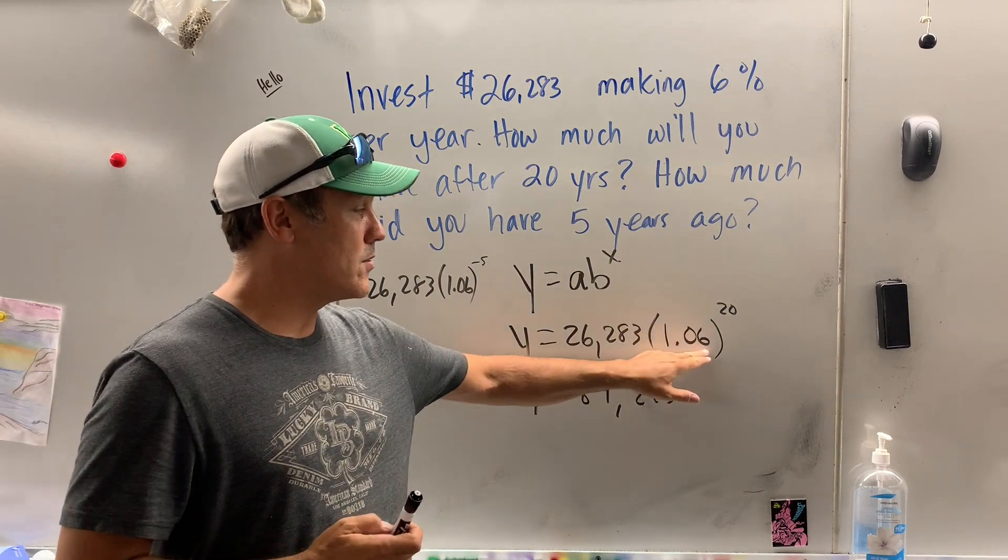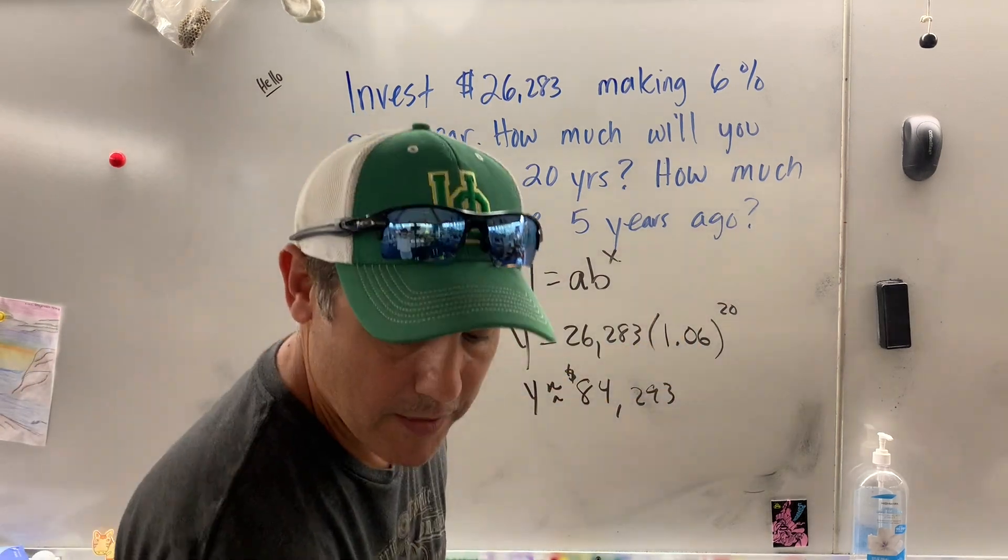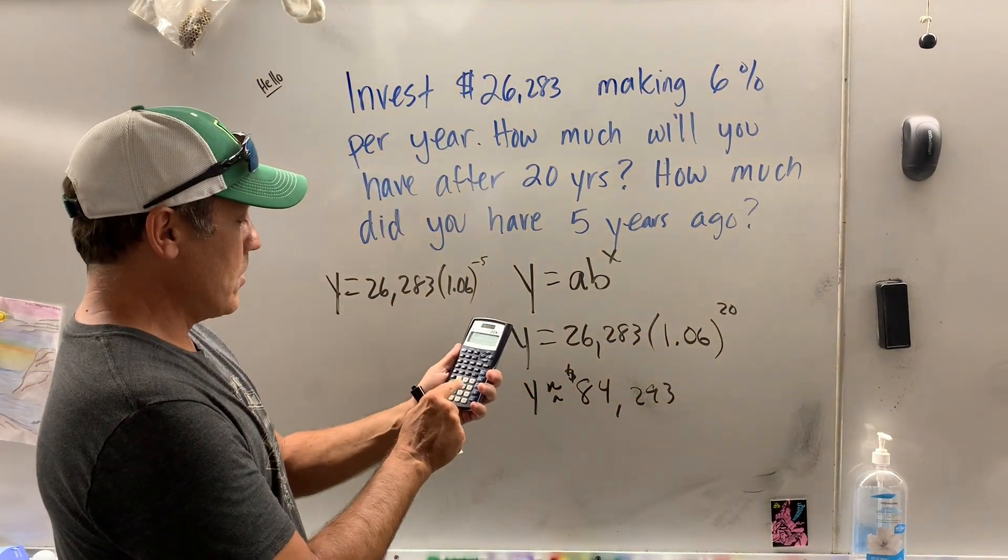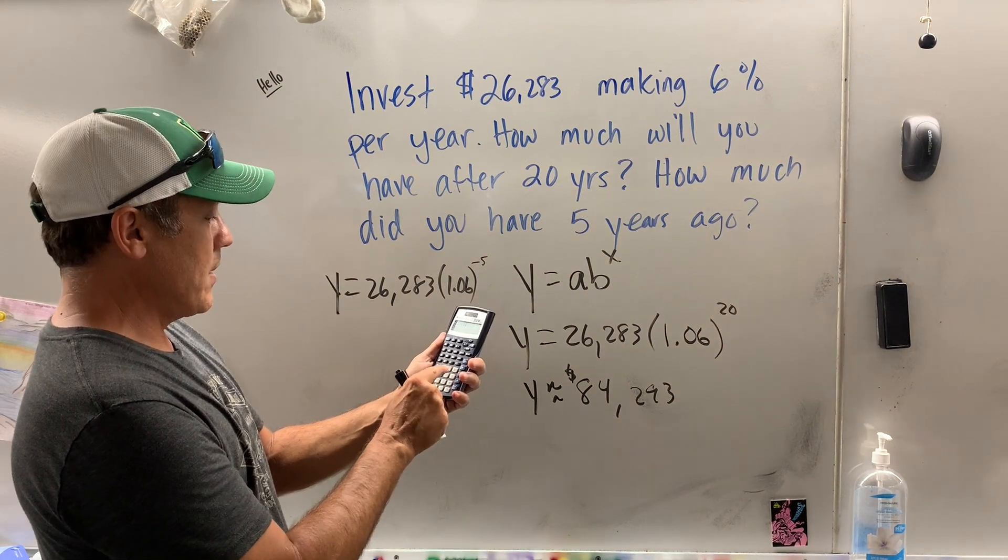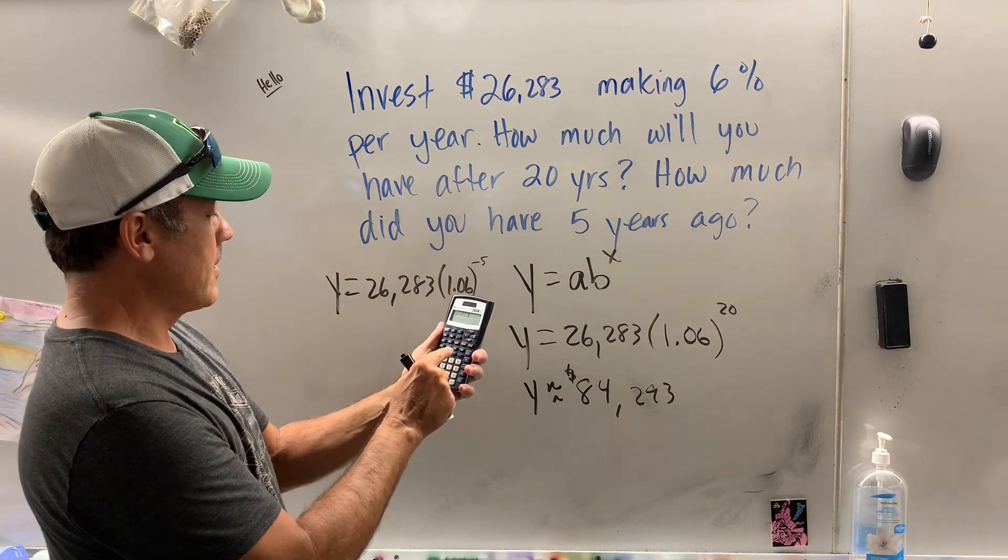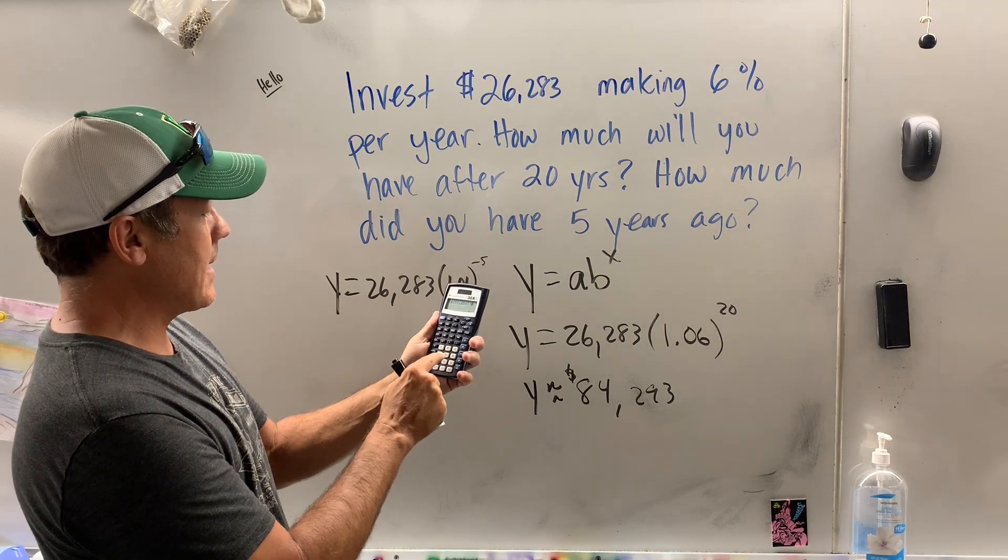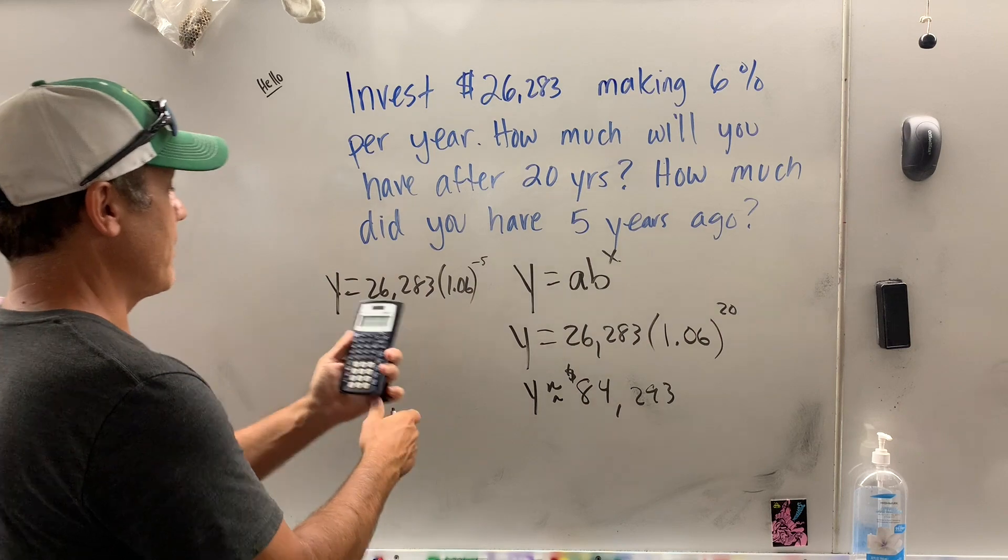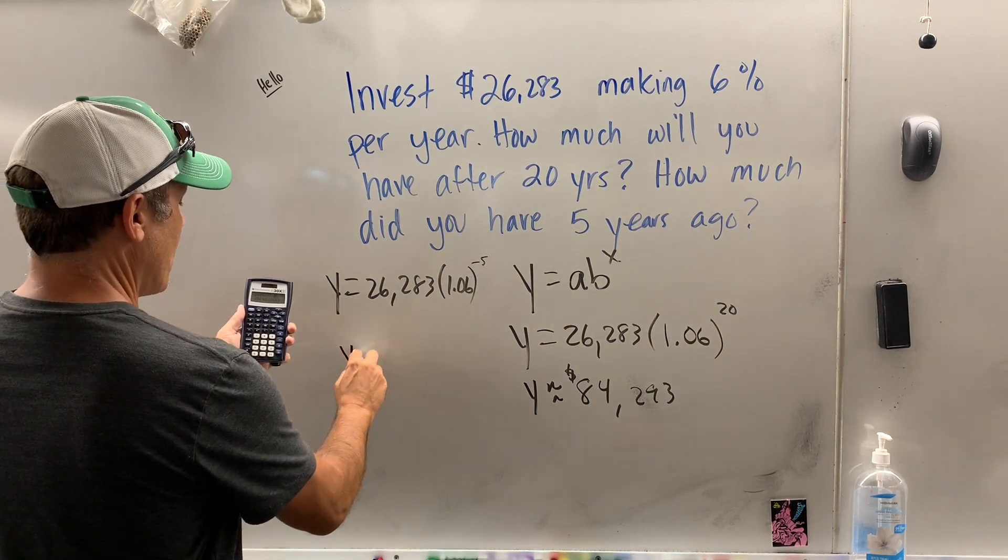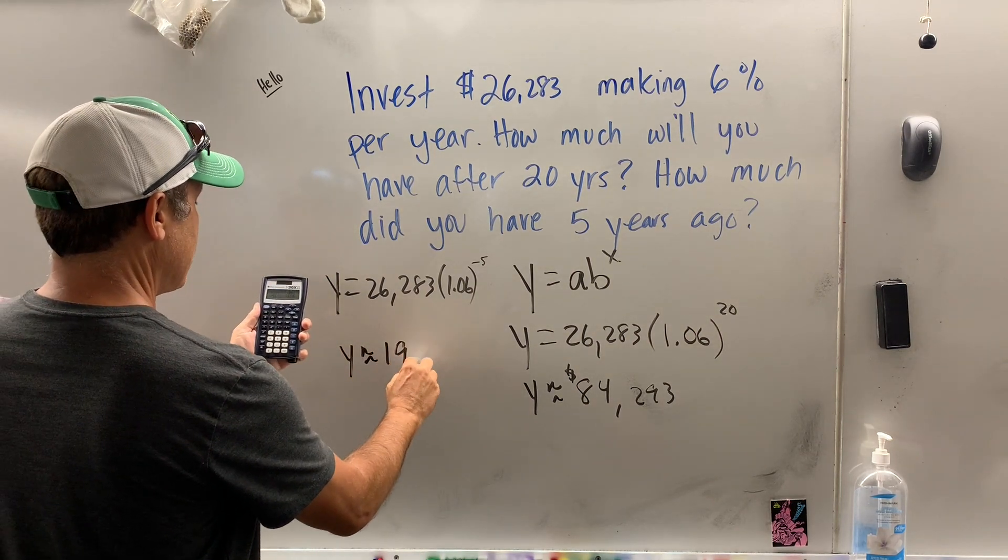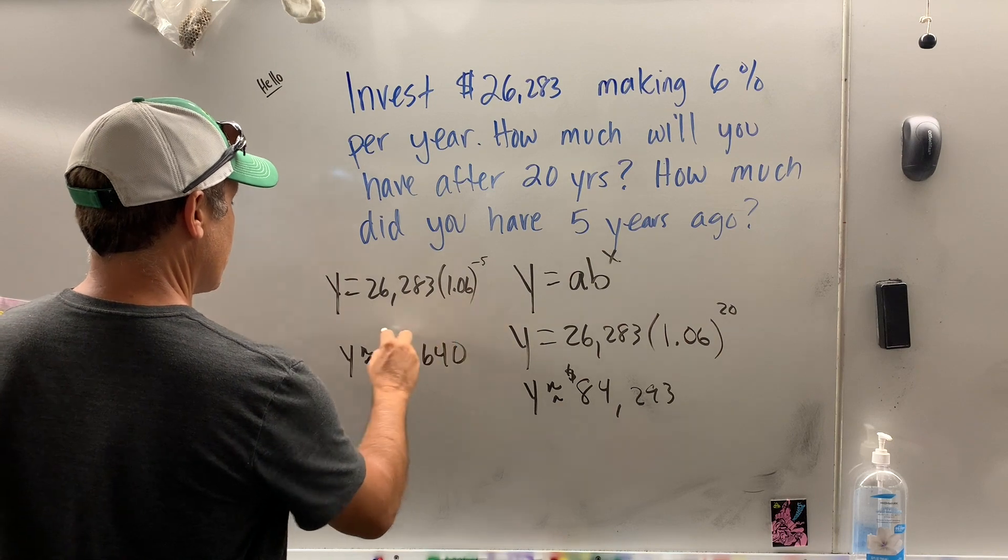Again, don't go jerking around with the multiplier. So now we take 26,283, and you can practice at home with your calculator, times 1.06, raised to the negative 5. So your investment 5 years ago was only worth about $19,640.